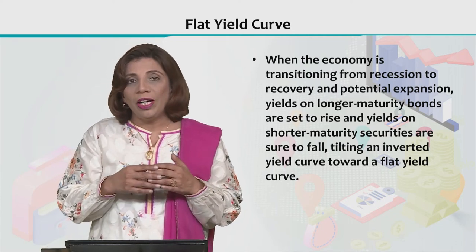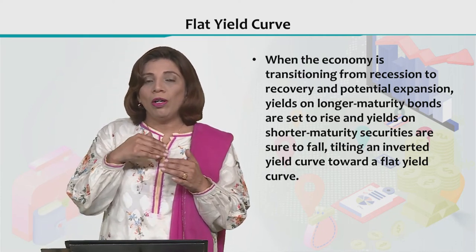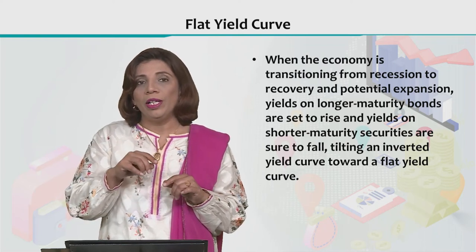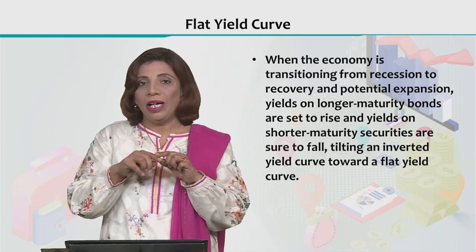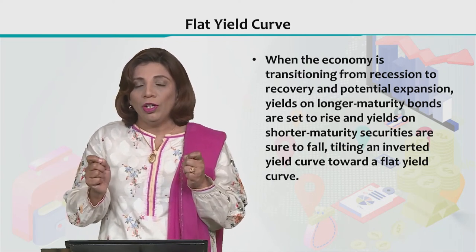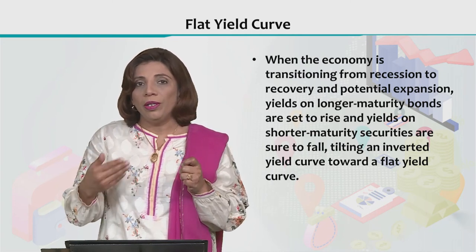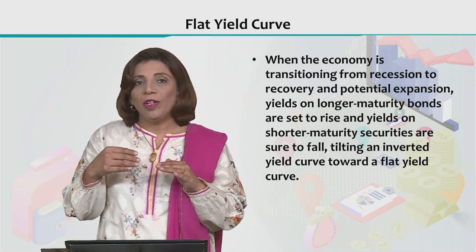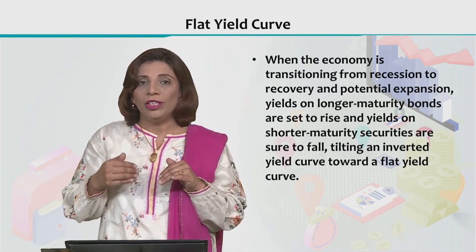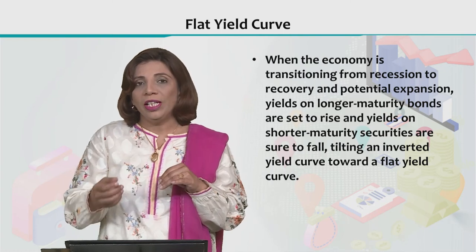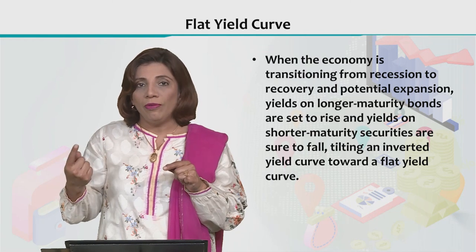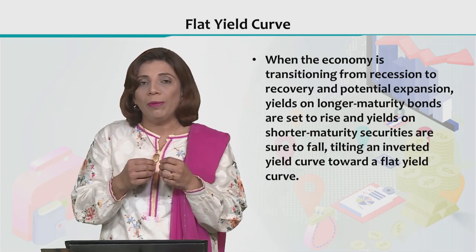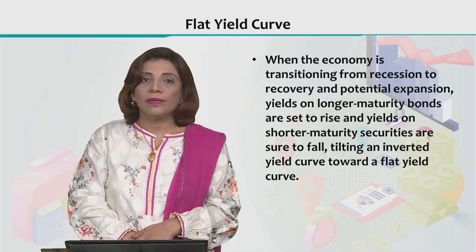We observe that whenever there is an economy transitioning or moving from a recession situation — an economic scenario where there is recession — to some sort of recovery, the inverted yield curve starts to become flat, and that particular situation is represented through the flat yield curve. Eventually, there may be a situation where things improve significantly, the financial market conditions become much better, and again long term bonds are offering higher interest rates while short term bonds are offering a low rate of interest. In that situation, the inverted yield curve transforms into a normal yield curve, but the phase in between is represented through a flat yield curve — which you can represent as a horizontal straight line.